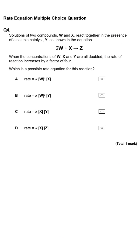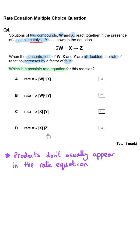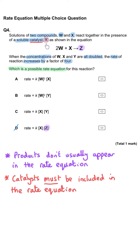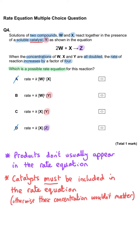Solutions of two compounds w and x react in the presence of soluble catalyst y. When the concentrations of w, x, and y are all doubled, the rate increases by a factor of 4. Which is a possible rate equation? First, one option includes product z, so that can't be correct. Second, the catalyst y must appear in the rate equation, so the answer is B or C — and y is a catalyst because it doesn't appear in the overall chemical equation.